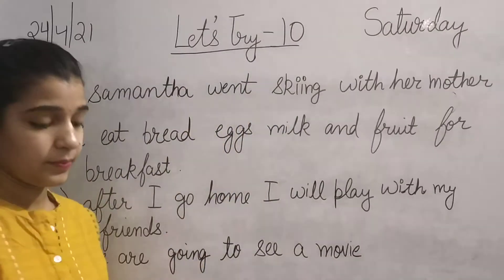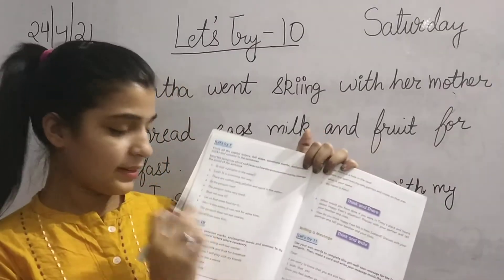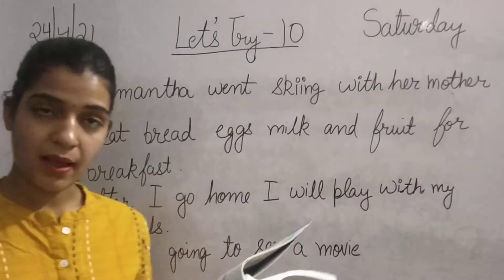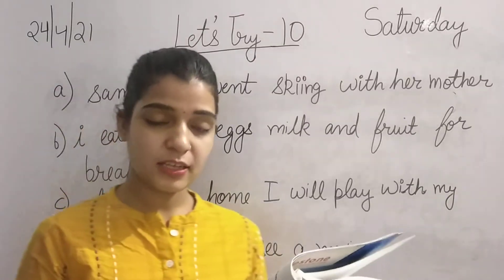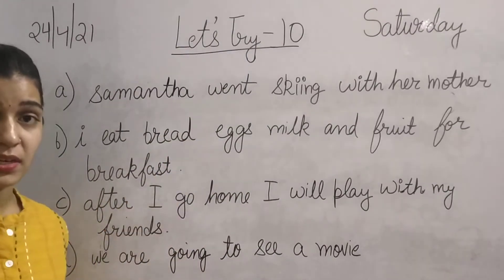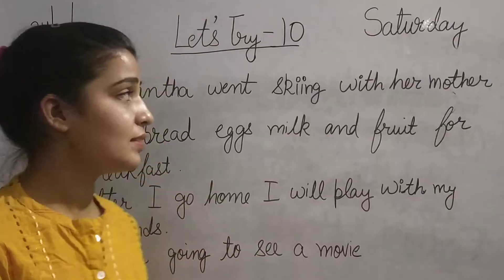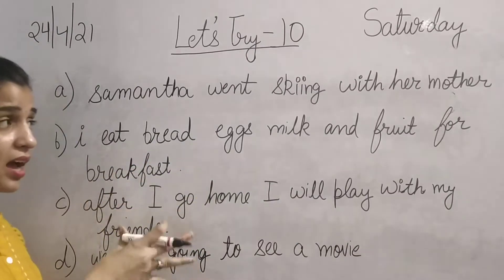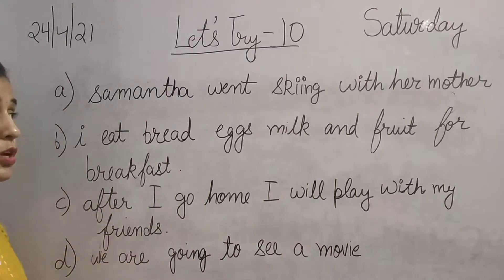Now we will do Let's Try 10, which is also at page number 10. The question says: add full stop, question marks, exclamation marks and commas to the sentence; use capital letters when necessary. In this exercise we have to add the punctuation — jahan par bhi necessary hai, we have to add the punctuation.